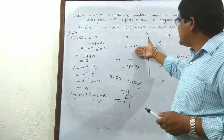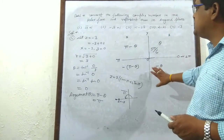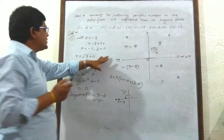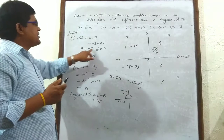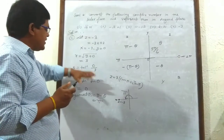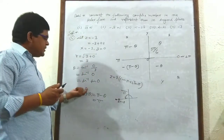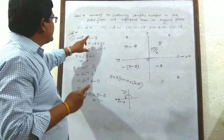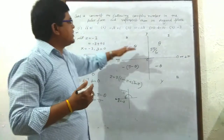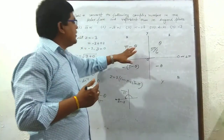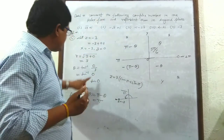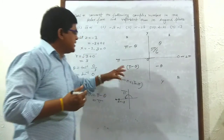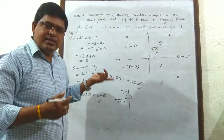In the Argand plane, z = −3 is represented at angle π in the second quadrant. To summarize the trick: first quadrant → θ, second quadrant → π − θ, third quadrant → −(π − θ), fourth quadrant → −θ. Simply compare the given complex number to x + iy, find r, then find θ using only the numerical values (ignoring signs), then apply the quadrant rule. This ensures the principal value always satisfies −π < θ ≤ π.